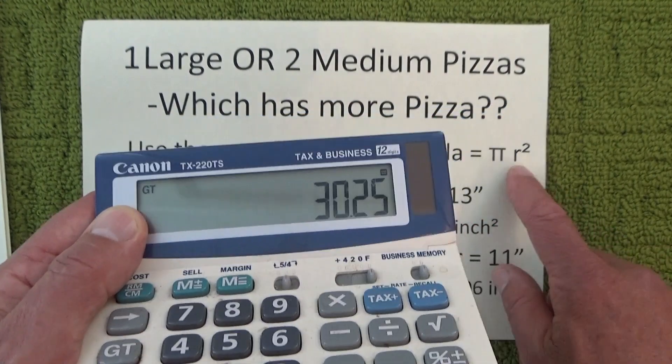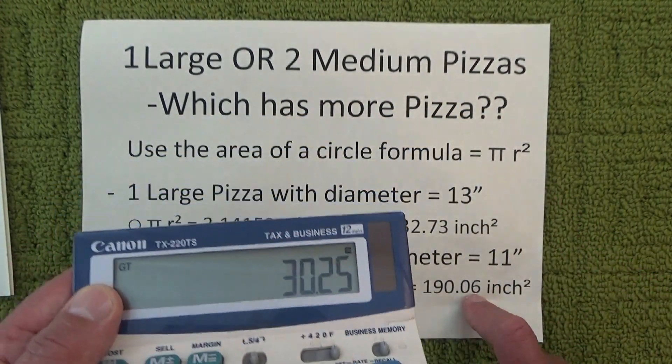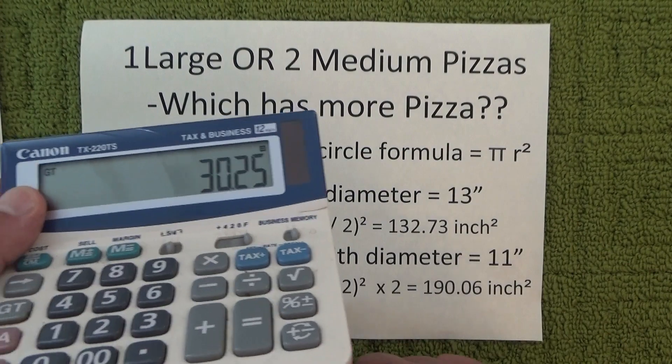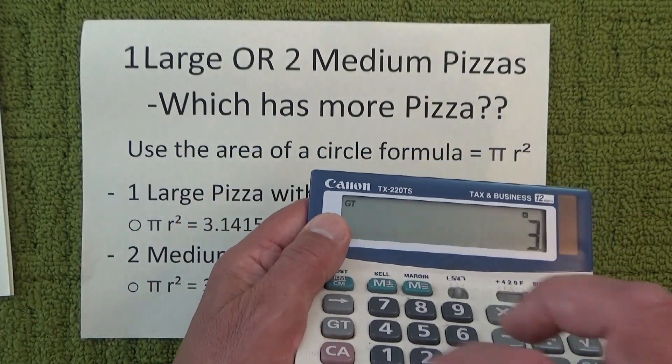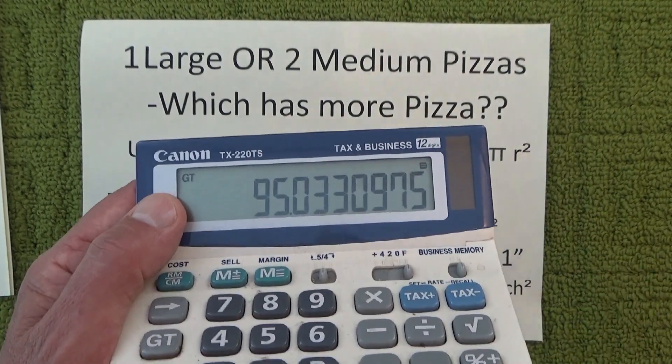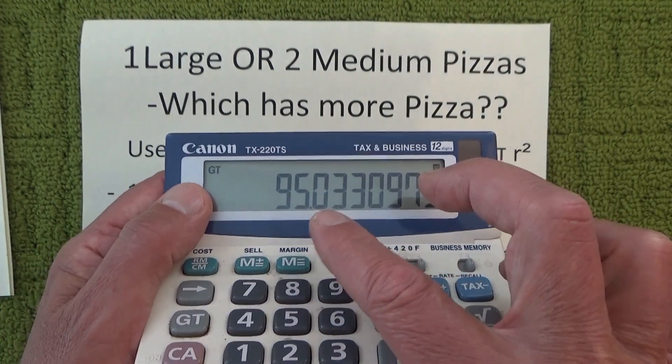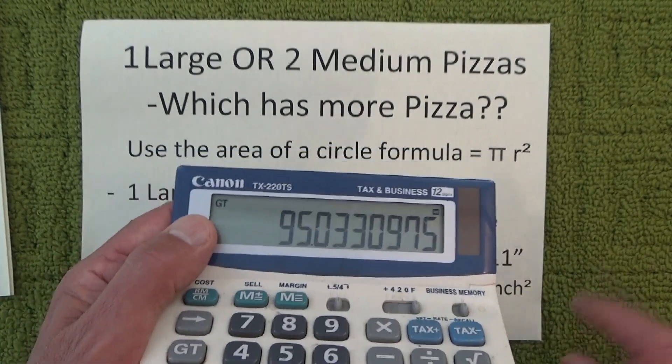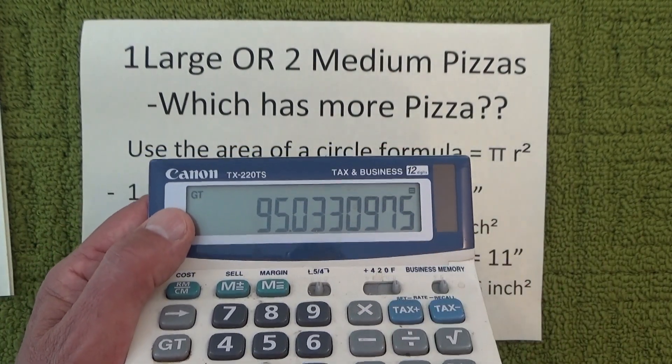Then we multiply that by π, 3.14159, and that gives us an answer of 95 square inches for one medium pizza.